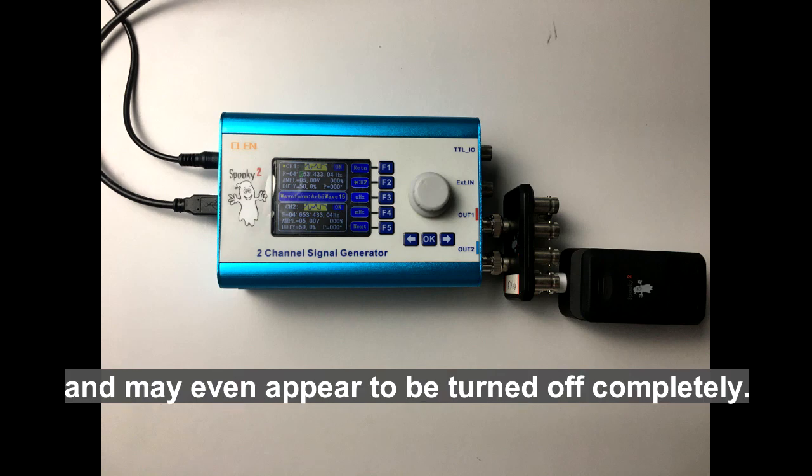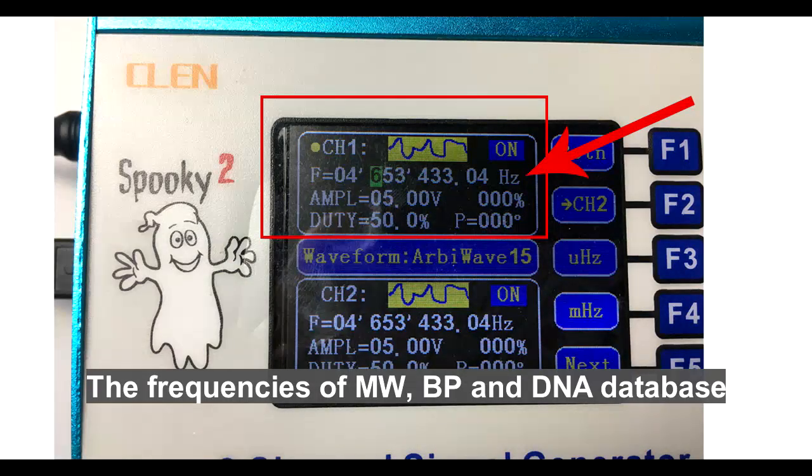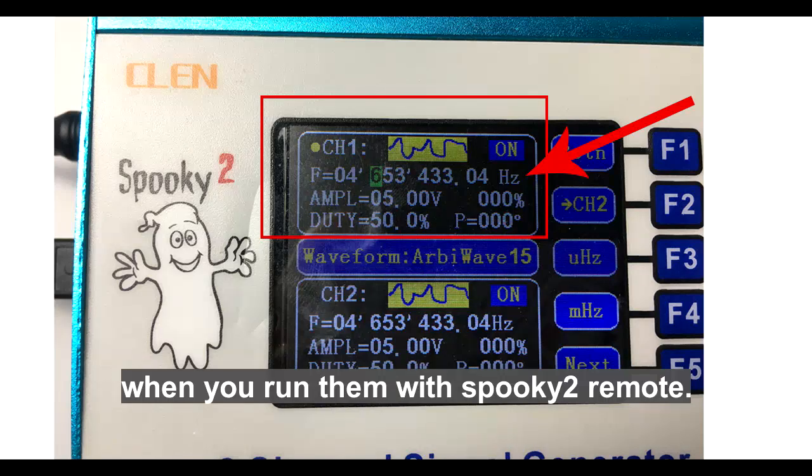The frequencies of MWBP and DNA database are very high, so generally no lights are on when you run them with Spooky2 Remote.